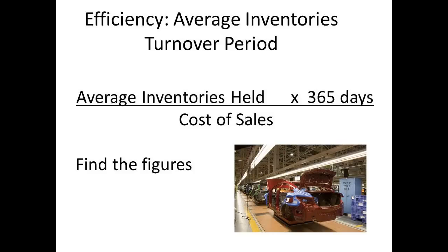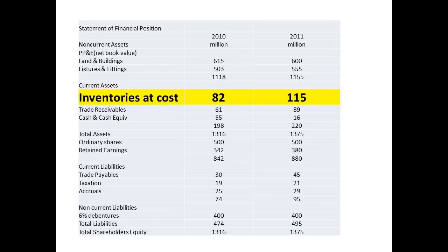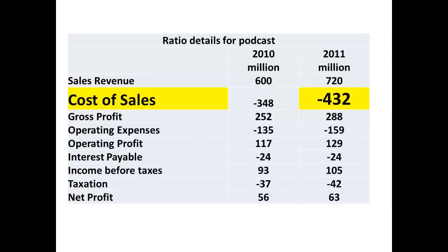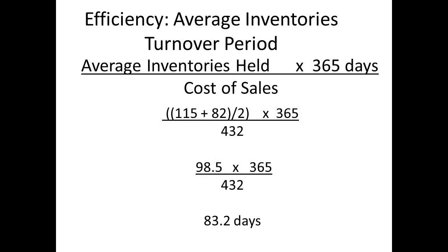The figures for inventory are on the balance sheet. The calculation requires an average, meaning we need figures for inventory at the start and end of the year. At the start, inventory was £82 million, and at the end of the year it was £115 million. The cost of sales figure comes from the income statement and is £432 million. Calculating: 115 plus 82 divided by 2, then divided by 432, finally multiplied by 365, we get an answer of 85.2 days.